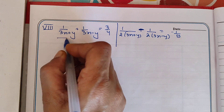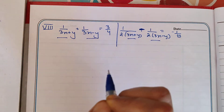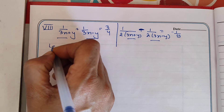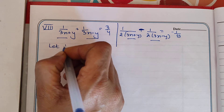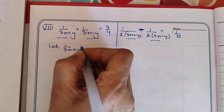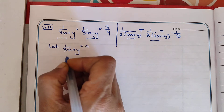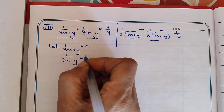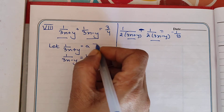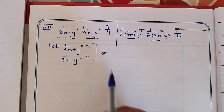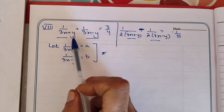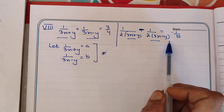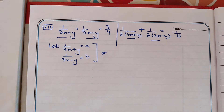So, we look at the common parts in both expressions. Let 1 divided by (3x + y) equal to a, and 1 divided by (3x − y) equal to b. We substitute these into the equation — same part on each side gets replaced by the same variable.